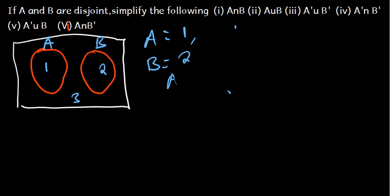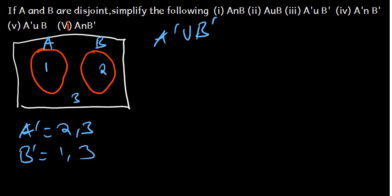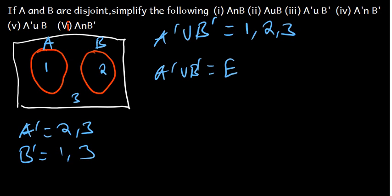Part 3 is A complement union B complement. Let's list A complement: it is {2, 3}. B complement is {1, 3}. Adding these together we get {1, 2, 3}, which is the same as the universal set. So A complement union B complement equals the universal set, represented by the symbol E.